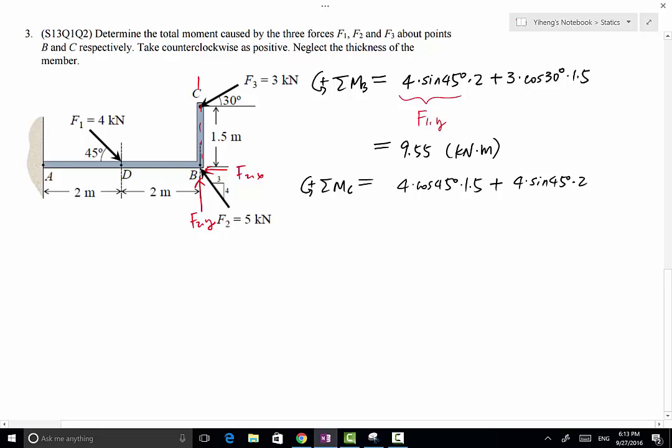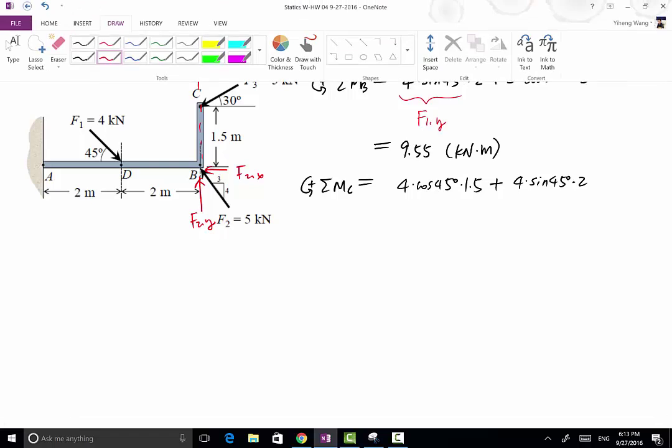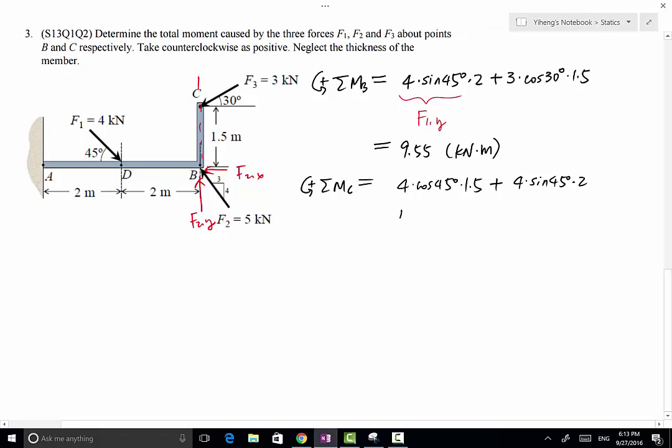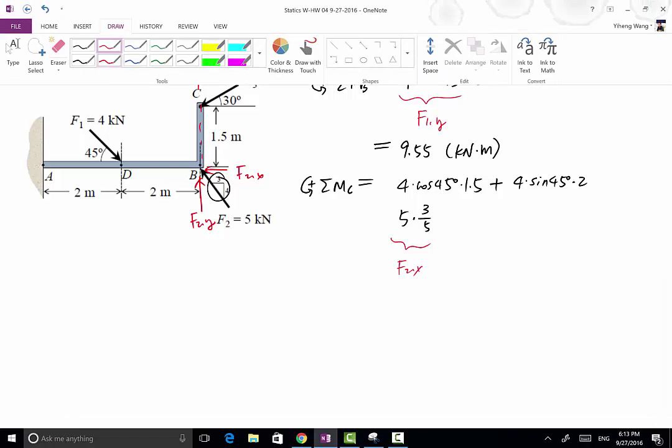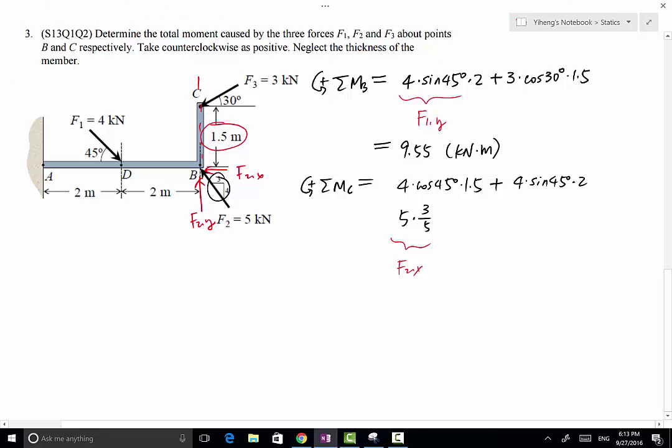F2X has a magnitude of 5, the X component determined by this 3-4-5 triangle. It's 3 over 5, that's the magnitude of F2X. Its moment arm is this distance right here, so that is 1.5 meters. Now F2X is creating a clockwise rotational effect about point C, therefore its moment about point C is negative.